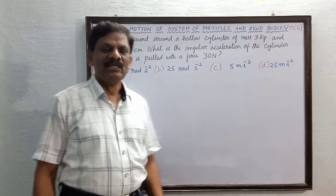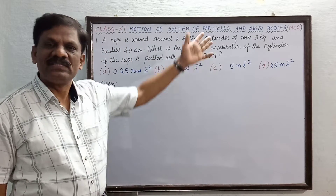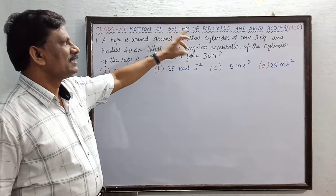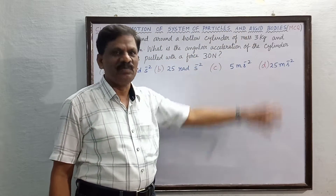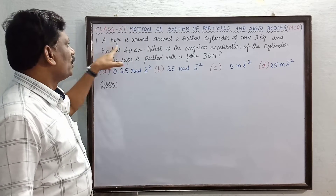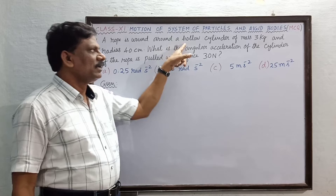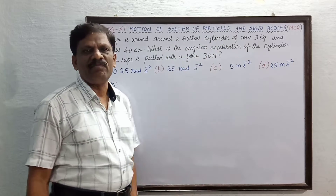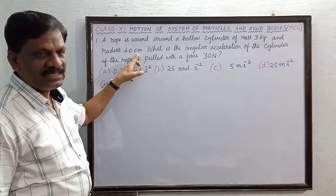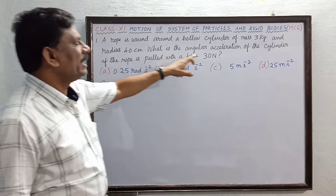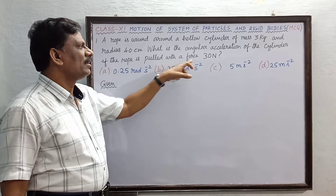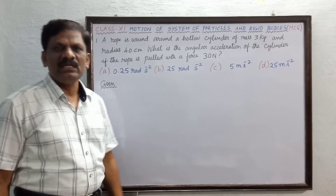Hi students, today we are going to solve the multiple choice questions in chapter 5 - Motion of System of Particles and Rigid Bodies. The first MCQ is: a rope is wound around a hollow cylinder of mass 3 kg and radius 40 cm. What is the angular acceleration of the cylinder if the rope is pulled with a force of 30 N?